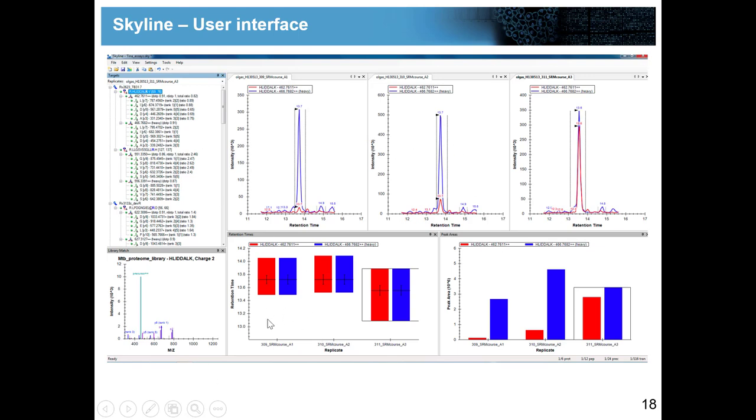This target window is always going from protein, peptide, precursor to all the transitions. What's also important to understand is depending on what you highlight here, you will change the views of all the other windows. If you highlight the protein up here you will see protein information on all the other windows. If you highlight a peptide you will see peptide information. If you highlight the precursor you will see the precursor information.